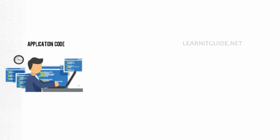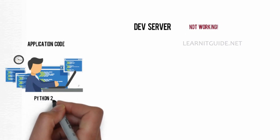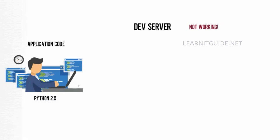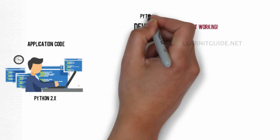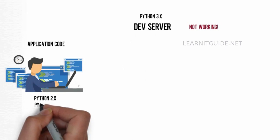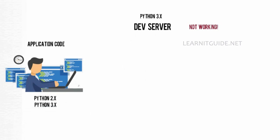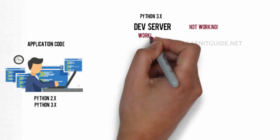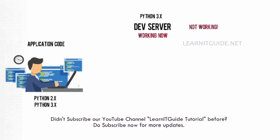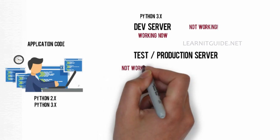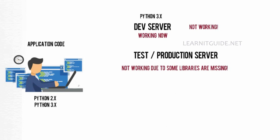Let's say a developer has developed code on his own machine and it was working fine. When he moved the same code to the development server, the application would not work properly because his machine and the development server did not have similar configurations and versions. He developed the code in Python 2 but the development server had Python 3. So he needed to rework the application code to make it work with Python 3. Assume he fixed the issue and it's now working on the development server, then he moves the same application code to the testing or production environment. Again, the application may not work in the other environment due to some missing libraries. This is the biggest problem we have.